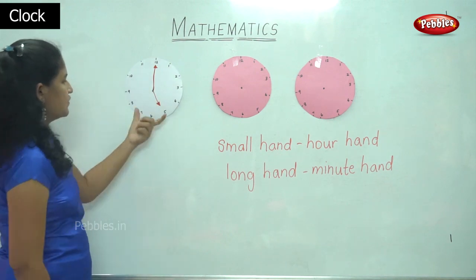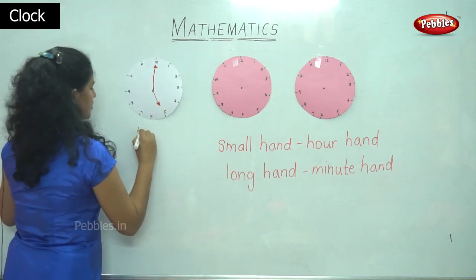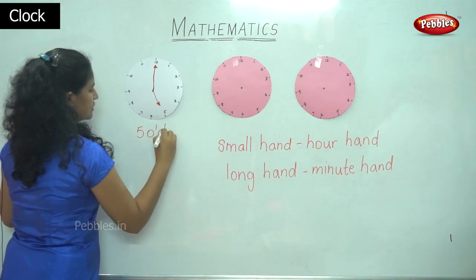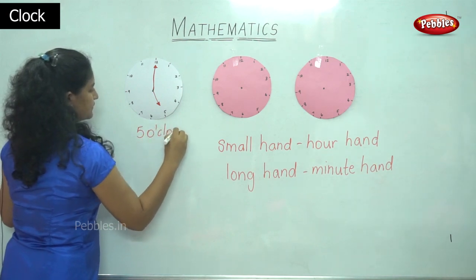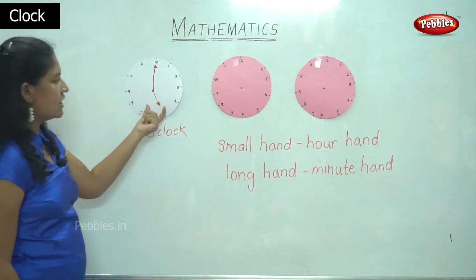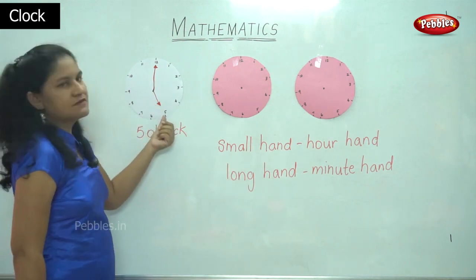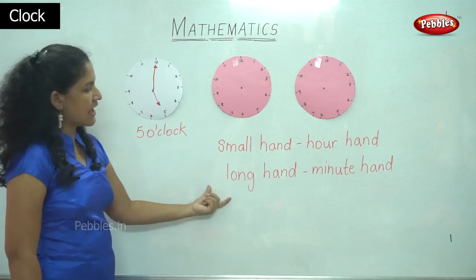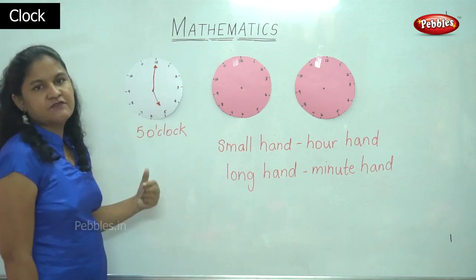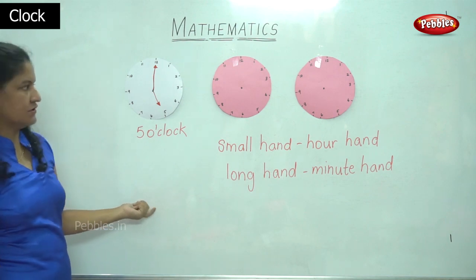So we read the time as five o'clock. When it is five o'clock, the small hand or the hour hand points towards five and the long hand or the minute hand points towards twelve, and the time is read as five o'clock.